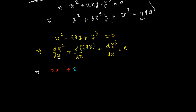For the second term, 2 is a constant coefficient, so we factor it out. We are left with xy, which is a product of two functions — x is the first function and y is the second. So we apply the product rule: the derivative is the first function times the derivative of the second, plus the second function times the derivative of the first.